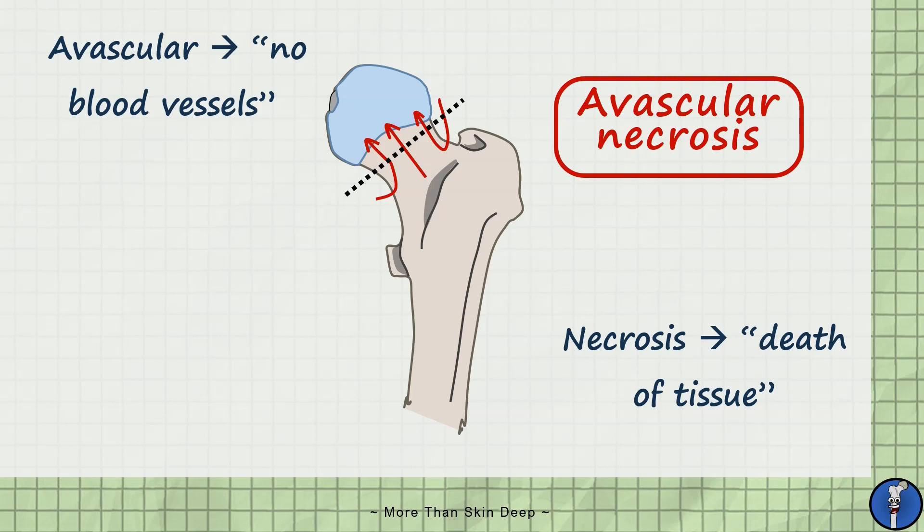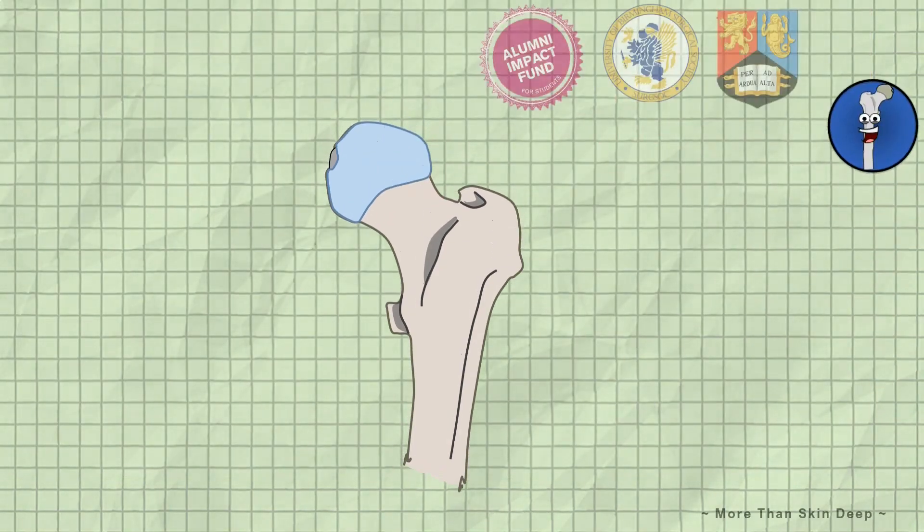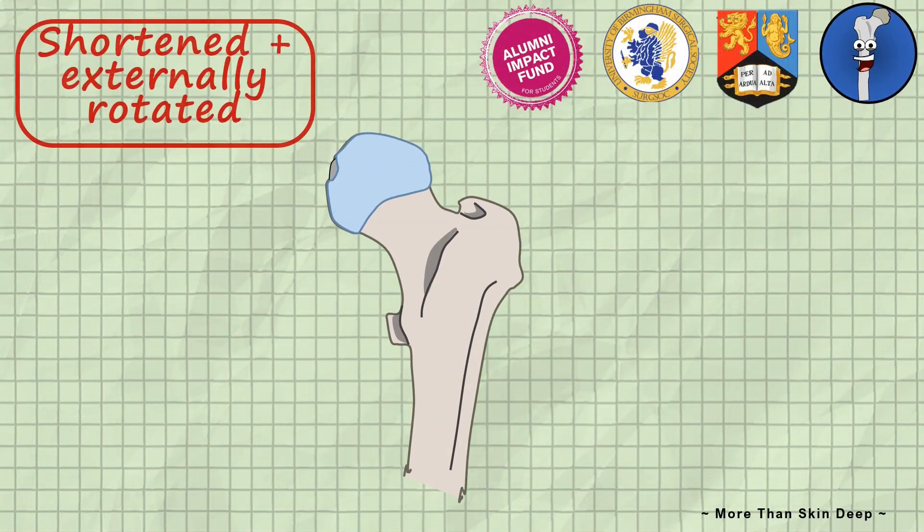Some of you may remember that the scaphoid bone in the hand has a similar blood supply to this and undergoes a similar process when fractured. A person with a fractured neck of femur will have a shortened and externally rotated leg.